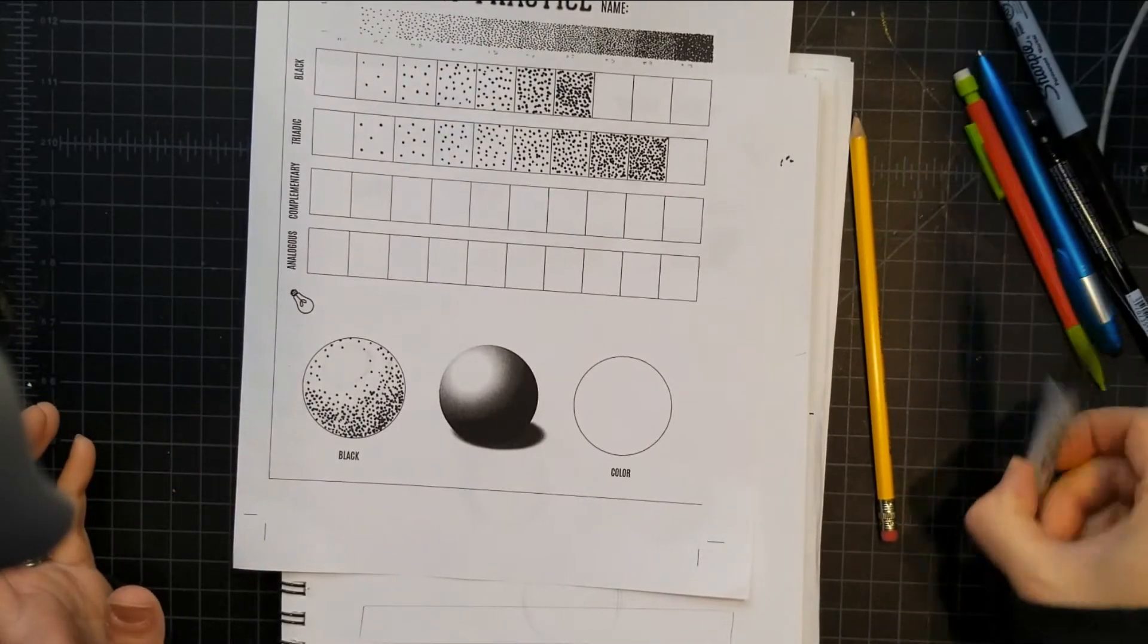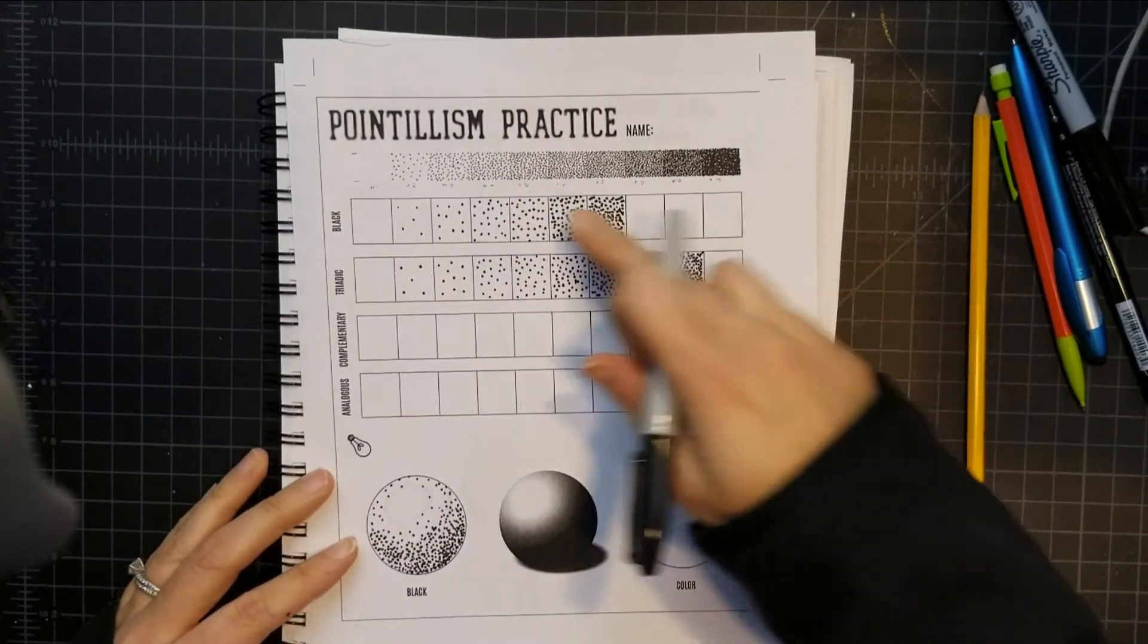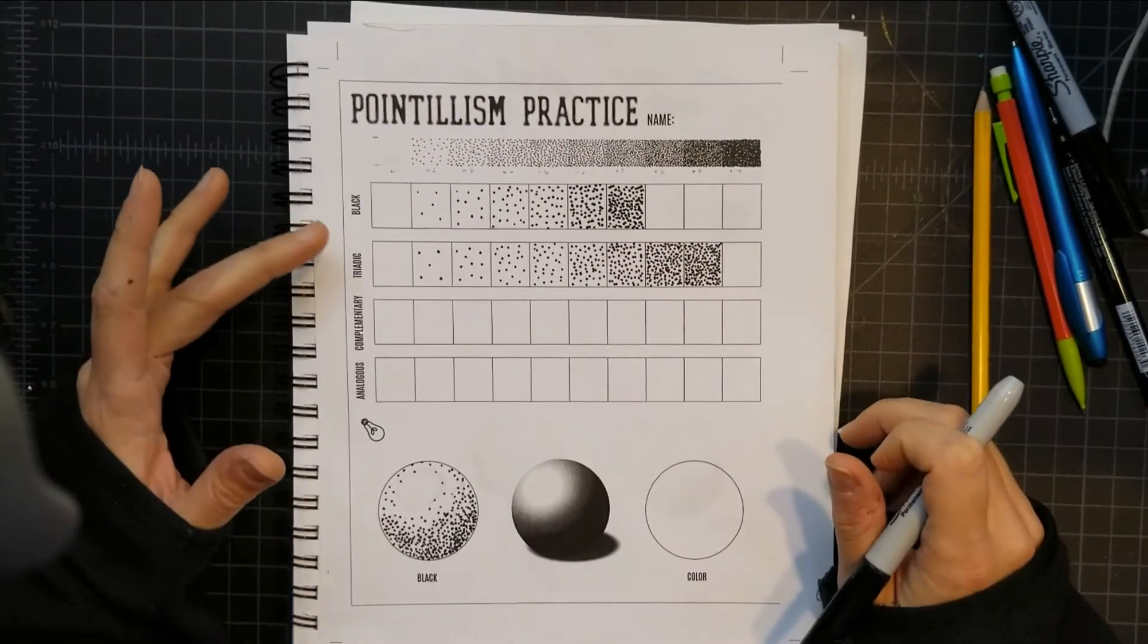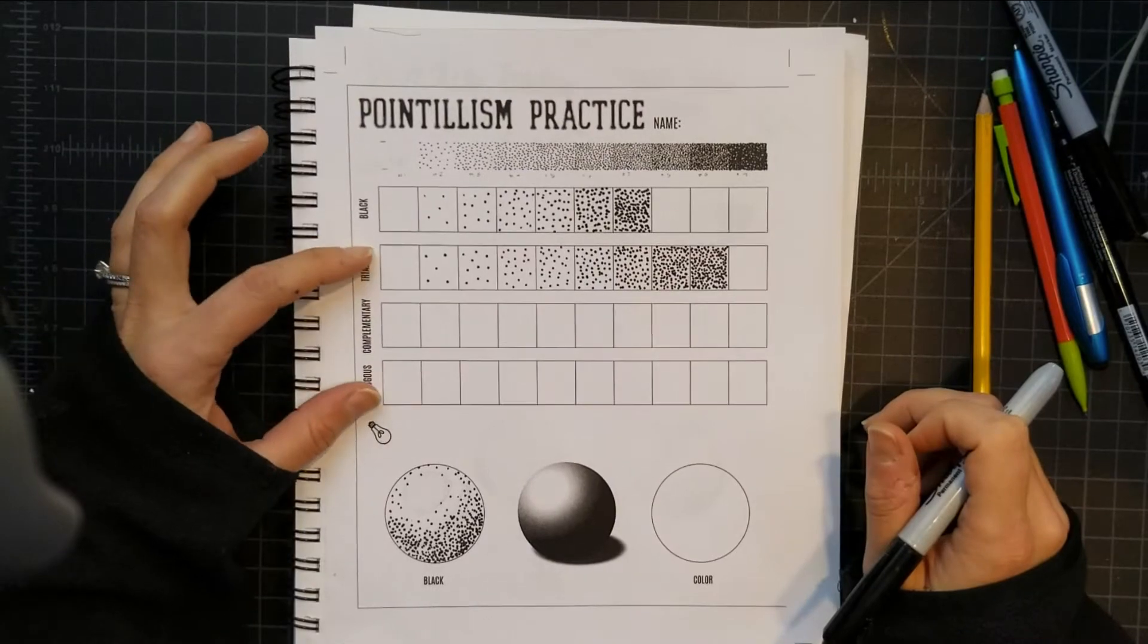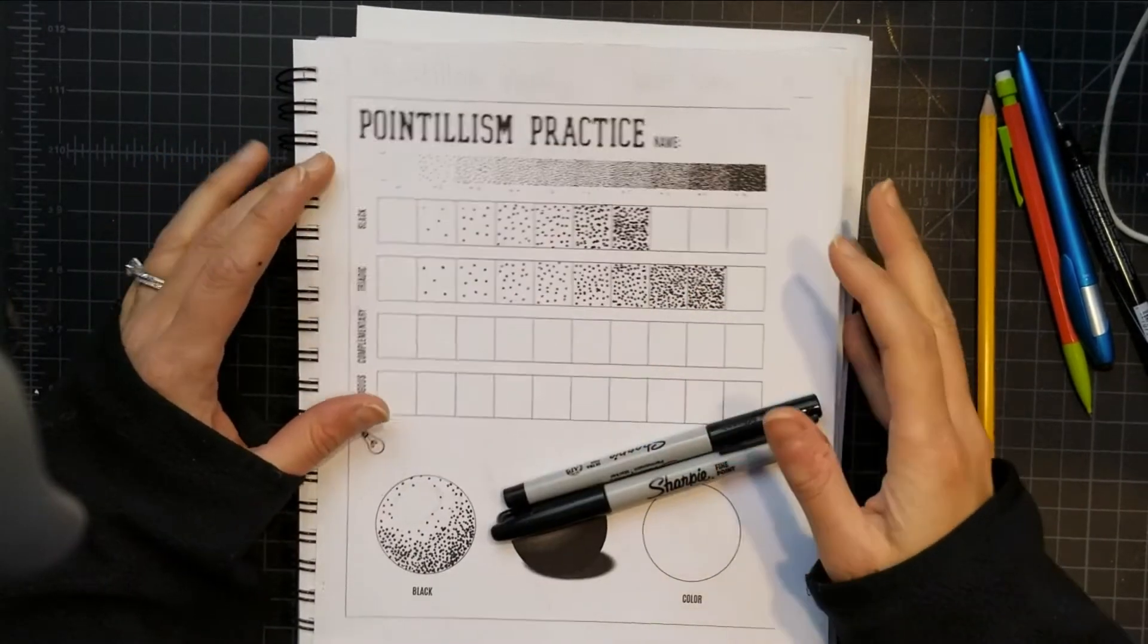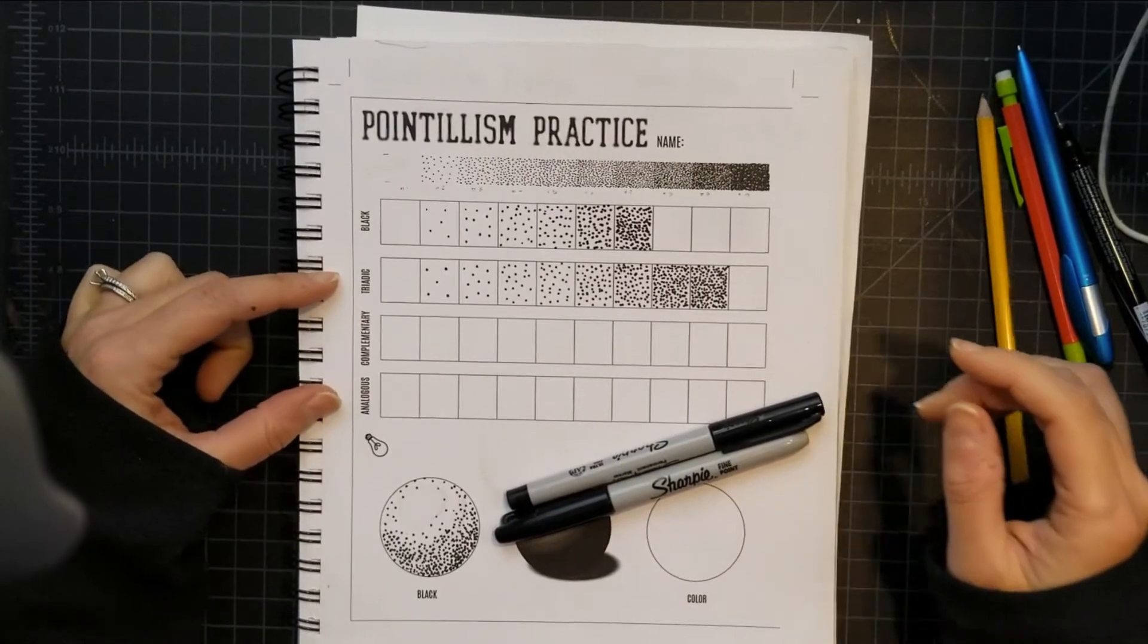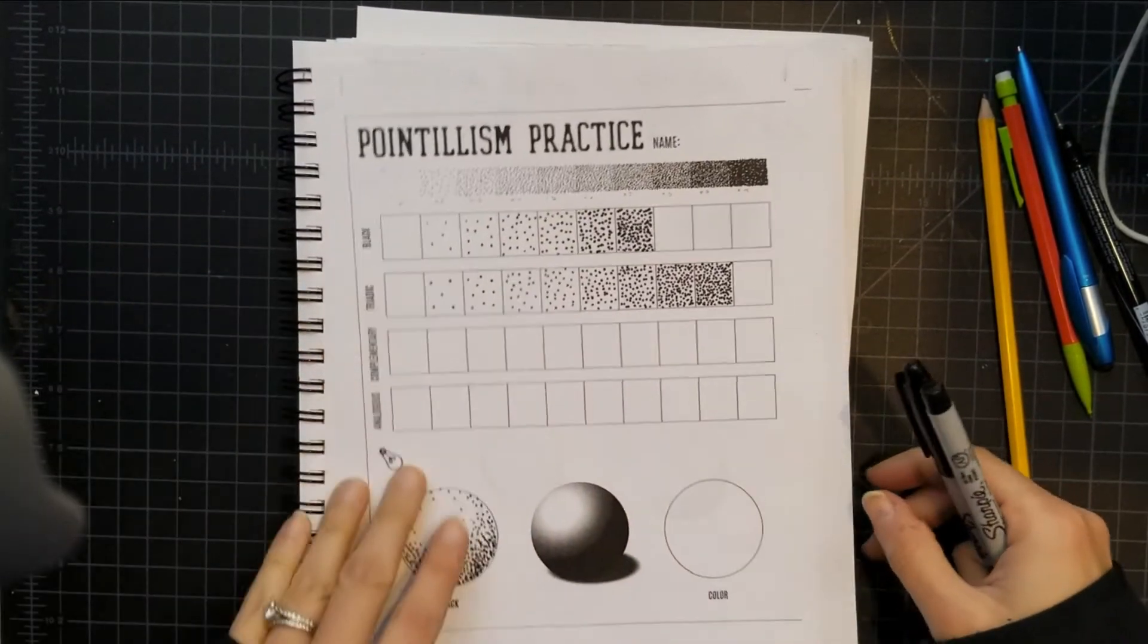So we're using dots. I did demonstrate in class how to set your sketchbook up for this value scale. Most of you might not have colored markers at home. I know you guys have a Sharpie. They gave you one. You have two, right? So yes, we have this worksheet, but if you don't have different colored markers at home, you don't have to worry about these last two or three value scales.